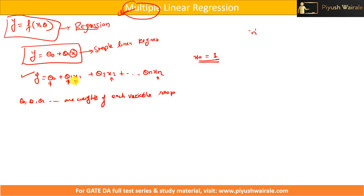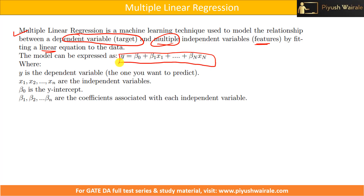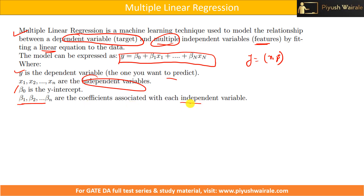Multiple linear regression is a machine learning technique used to model the relationship between the dependent variable — the target variable — and multiple independent variables (features), by fitting a linear equation to the data. The generalized expression uses beta notation: y of x comma beta, where y is the variable you want to predict, x1 through xn are the independent variables, beta naught is the y-intercept, and beta 1 through beta n are the coefficients — or weights — associated with each independent variable.